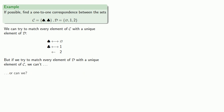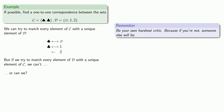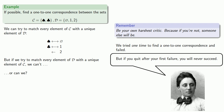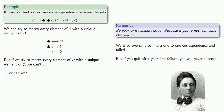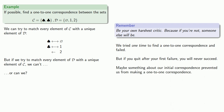Or can we? This may be the hardest thing in mathematics. Remember, be your own harshest critic, because if you're not, someone else will be. We tried one time to find a one-to-one correspondence and failed. But if you quit after your first failure, you will never succeed. Maybe something about our initial correspondence prevented us from making a one-to-one correspondence.